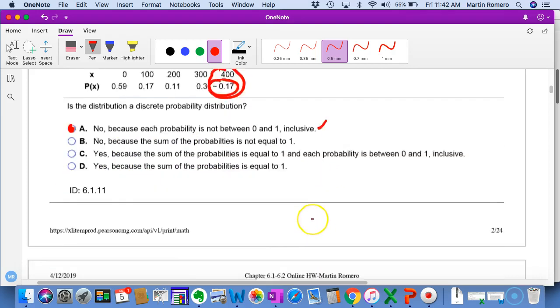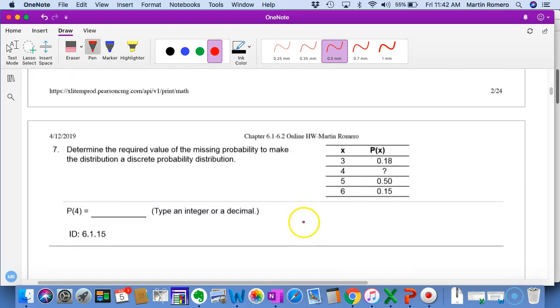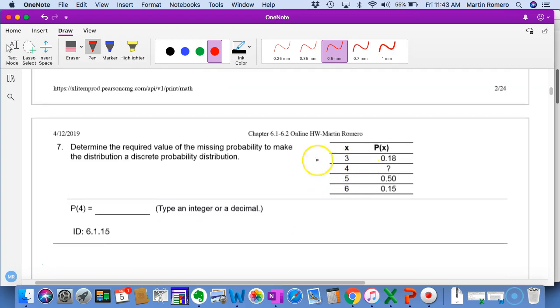That is connected to another problem, 6.1.15, where if this is a probability distribution, what's the missing value right there? Remember, for this to be a probability distribution, here are my outcomes, these are the likelihood of that happening.